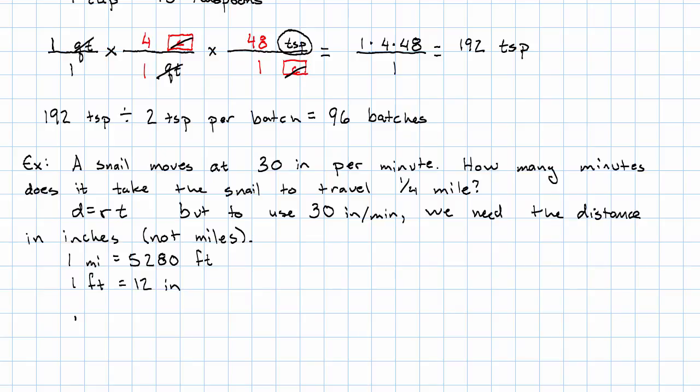So we start with a quarter mile. And then multiply that by a conversion factor with miles in the denominator. And then another conversion factor with inches in the numerator. We know how both of those units relate to feet. So we'll put feet in this numerator, feet in this denominator. Okay. So one mile is 5,280 feet. One foot is 12 inches.